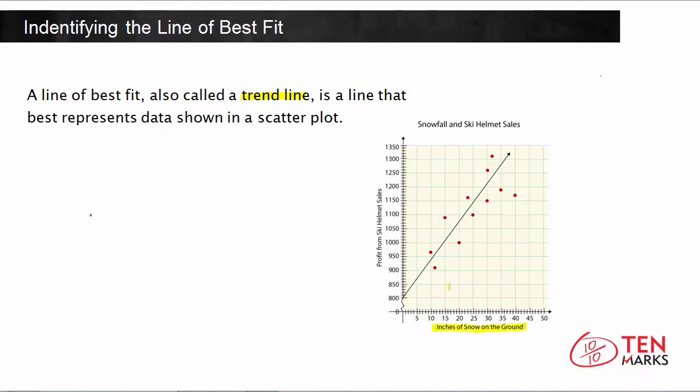On the x axis, you have the inches of snow on the ground, and on the y axis, you have the profit from ski helmet sales. So this scatter plot shows the relationship between the amount of snowfall and the amount of sales in ski helmets.